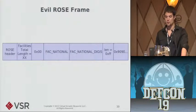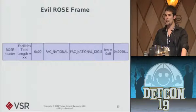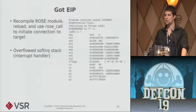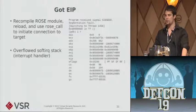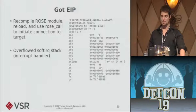The frame looks like: header, total facilities length (which didn't matter), a null byte, FAC_NATIONAL as the facility type, FAC_NATIONAL_DIGIS as the vulnerable facility, then a length value set to 0xFF which is 255 — more than enough to cause the overflow — and then a bunch of 0x90s (NOPs). You recompile your ROSE module, make a connection to your vulnerable host, and it causes a stack overflow on the soft IRQ stack, which is an interrupt handler receiving this data. In the debugger you can see we've overwritten the saved return address on the stack, and when that vulnerable function returned, it returned to all 0x90s — the value we put there.